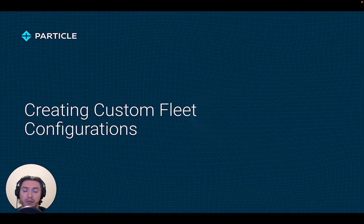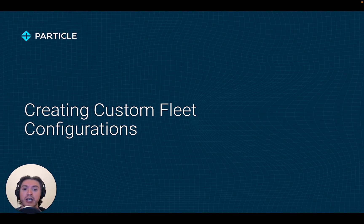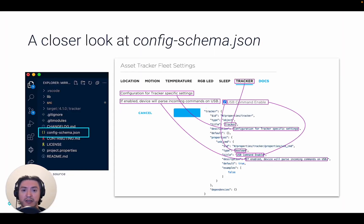Let's now discuss how to customize your fleet configuration to add your own settings and tabs and have those available in the console. As we've seen before, this can be helpful, for example, to send a deployment-specific sensor calibration value or to append the serial ID of the asset you're tracking to the location publish of your device. The first thing to know is that the fleet settings are specified in JSON schema. If you go into any Tracker Edge directory, you'll find a config schema JSON file at the root level. You can see in the picture how the console settings are a visual representation of the data within that JSON.